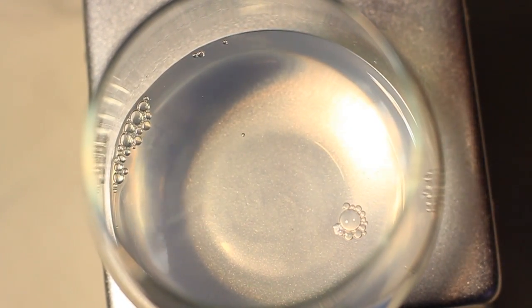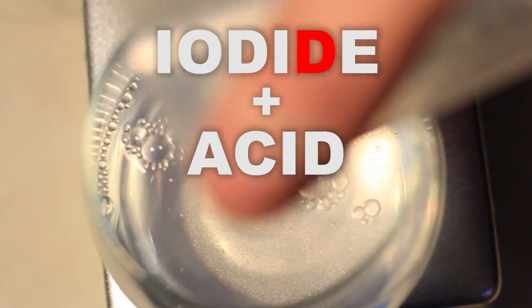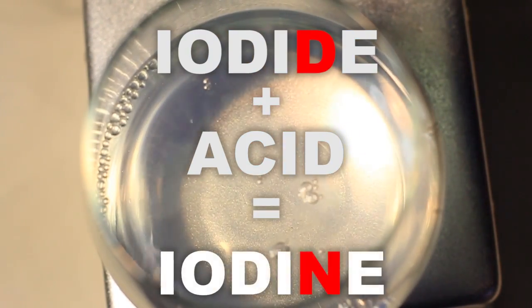Now pay attention. First, the iodate and sulfite battle it out, forming iodide. Then, the iodide reacts with the citric acid and the remaining iodate to form iodine.